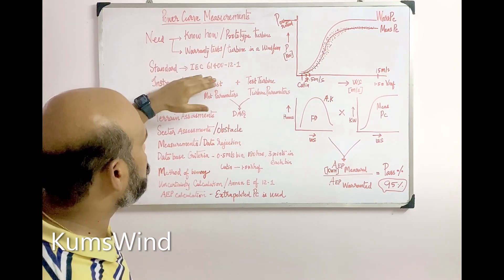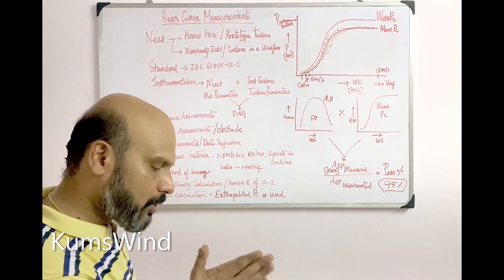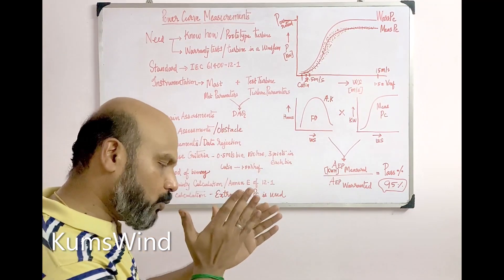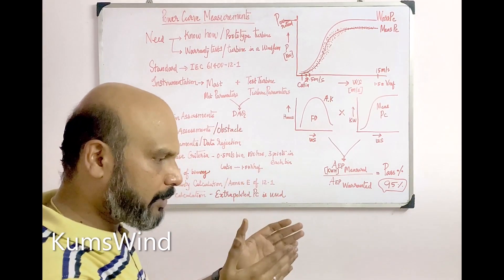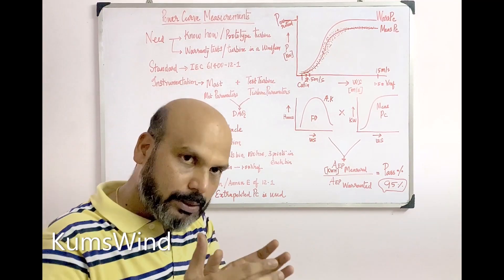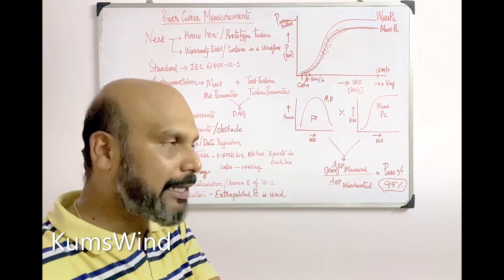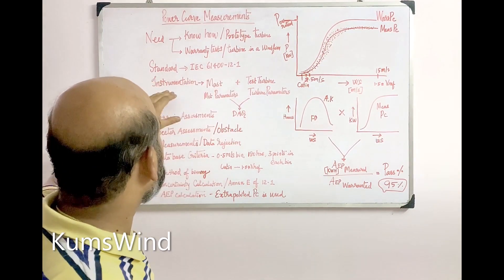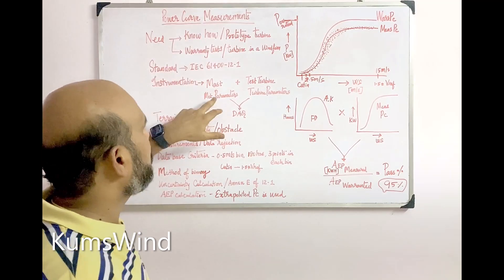The standard which governs the whole process is IEC 61400-12-1. This standard covers all stages and activities involved in power curve measurement, starting from the selection of instruments, to the sampling frequency, to the accuracies of the instruments, to the measurement process, the data analysis process, uncertainty calculation, and AEP calculation. Everything is well defined and explained by the standard.